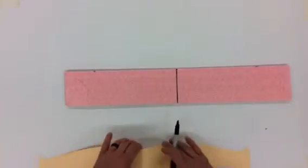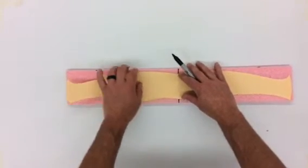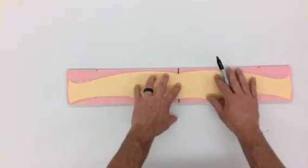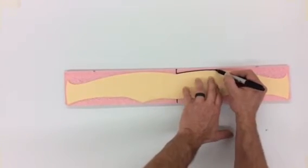That line is going to match up with our fold in the paper. We're going to make sure it's perfect so that everything is squared up and now we can begin to trace our design.